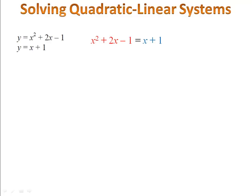Notice in this example we have y = x² + 2x - 1. We put the x² + 2x - 1 on one side of our equal sign. Then we have y = x + 1. We put the x + 1 on the other side of the equal sign.